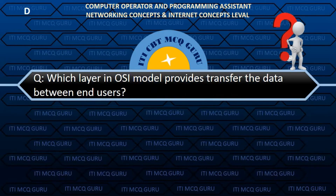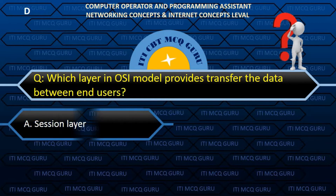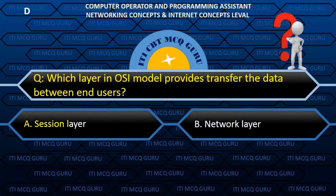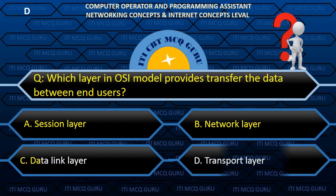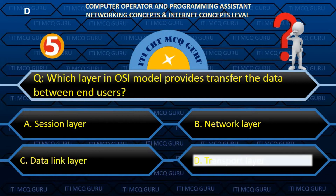Which layer in the OSI model provides transfer of data between end users? D. Transport layer.